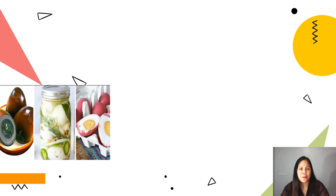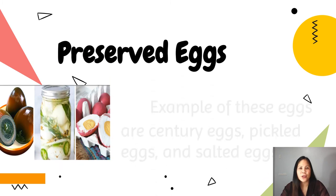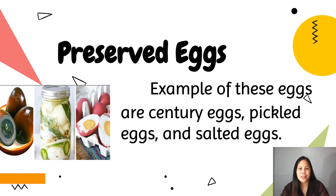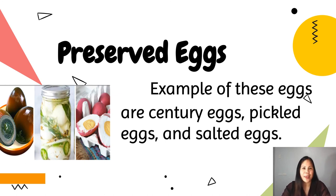For the last market form, we have preserved eggs. Examples are century eggs, pickled eggs, and salted eggs. The simplest method to preserve an egg is to treat it with salt, which draws water out of bacteria and molds and prevents their growth. The Chinese salted duck egg is made by immersing duck eggs in brine or coating them individually with a paste of salt, mud, or clay. So those are the different market forms of eggs: fresh, frozen, dried, or preserved.